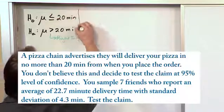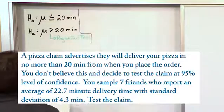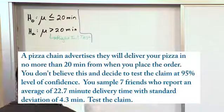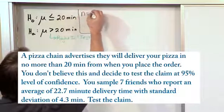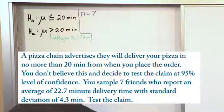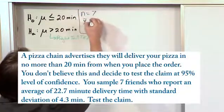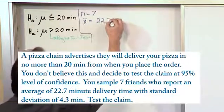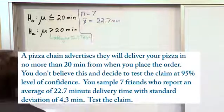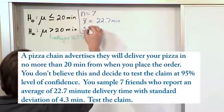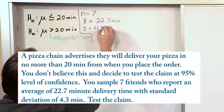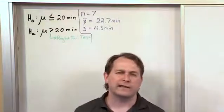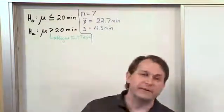Now we start pulling the information and data out of the problem and writing it down. We want to test our alternate hypothesis by asking seven friends. So n equals seven. They report back that their average delivery time — that's x-bar — is 22.7 minutes. The standard deviation of the answers we get back from these people is 4.3 minutes. Basically I asked seven friends what the delivery time was the last time they ordered pizza — some say 19 minutes, some say 20.